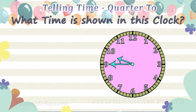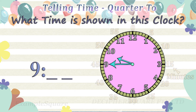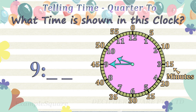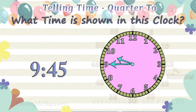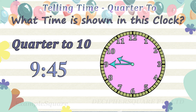What time is shown in this clock? The hour hand is pointing in between 9 and 10, so the time is 9 hours and some minutes. The minute hand is pointing at 9, referring to 45 minutes. The time is 9:45. It is 15 minutes to 10, or quarter to 10.